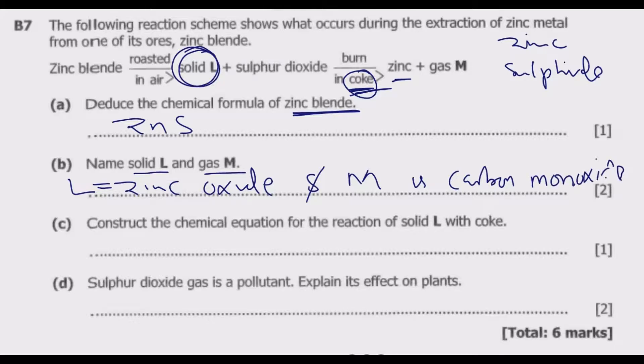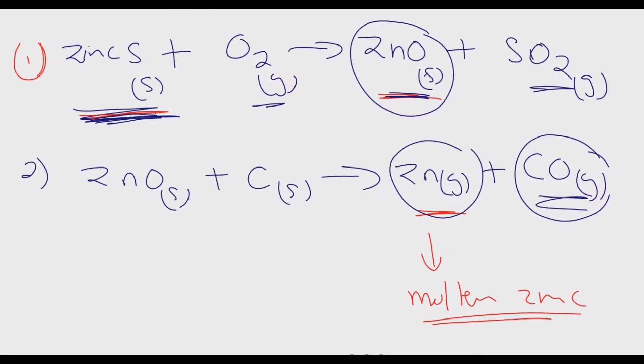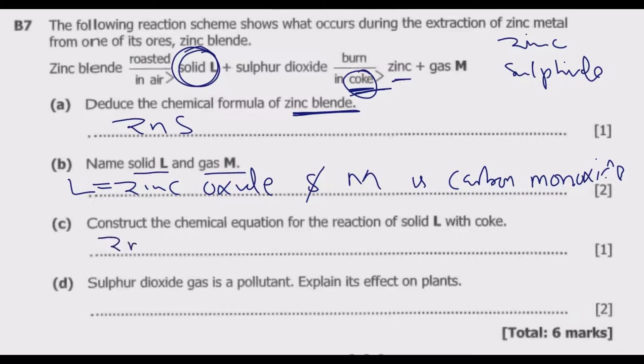Part C: construct the chemical equation for the reaction of solid L with coke. Solid L is zinc oxide. We've already done this equation, it's just a matter of balancing it. This side we have one carbon, one carbon correct. One zinc, one zinc. Oxygen we have one. So this equation is balanced. The equation is: zinc oxide solid plus carbon gives zinc gas plus carbon monoxide gas.